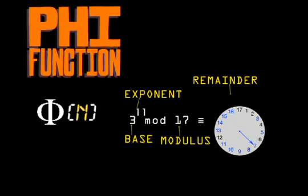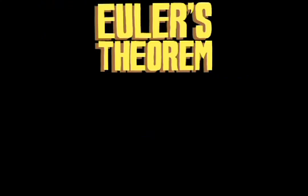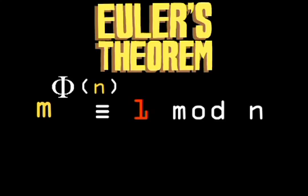Step 3, how to connect the phi function to modular exponentiation. For this, he turned to Euler's theorem, which is a relationship between the phi function and modular exponentiation as follows. m to the power of phi n is congruent to 1 mod n.